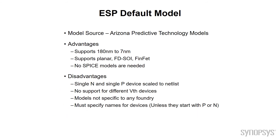The default model in ESP is based upon the Arizona Predictive Technology models. Its advantages are it runs from 180 to 7 nanometers, supports planar, FDSOI, and FinFET, and you don't actually need a SPICE model — the table is built into ESP. Disadvantages are that you only get a single N and a single P device scaled to your netlist, there's no support for different VTHs, and the model does not support any specific foundry — it's a generic model. You also must specify the names of the devices unless they happen to start with P or N.